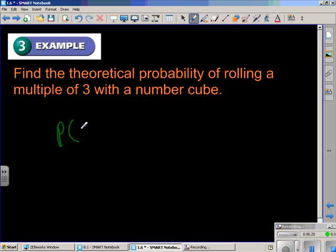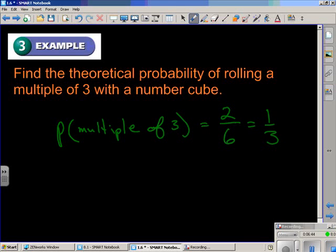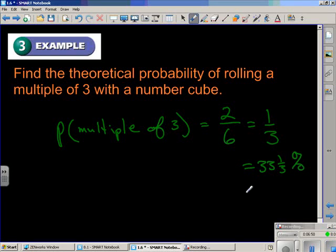Again, we use the probability notation, the probability of rolling a multiple of three. That's how you would write it out. There are two multiples of three on a die. That would be the number three and the number six. And that does reduce to the fraction one-third. So you have a one-third chance, or one out of three chance, or a thirty-three and a third percent chance.